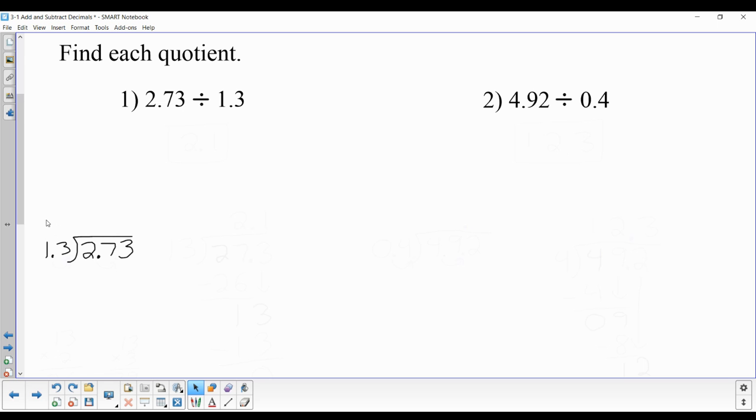Now you cannot actually divide with a decimal, the reason being that 1.3 has two digits and it is smaller than 2, which only has one digit. So you can't actually have 1.3 go into 2 a number of times and be able to subtract. To be able to do long division, the number on the outside has to be a whole number.